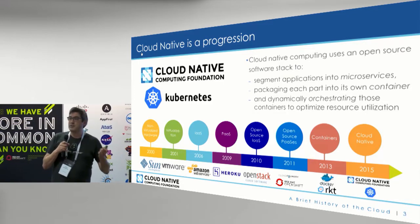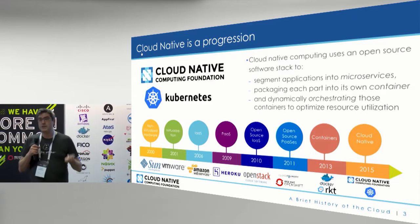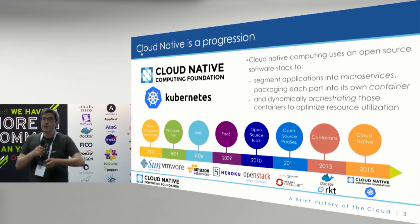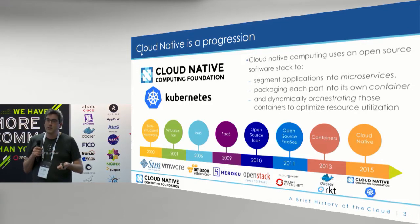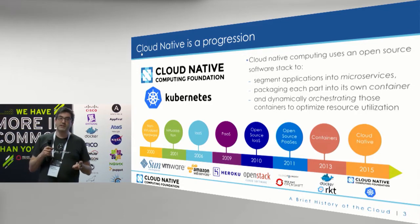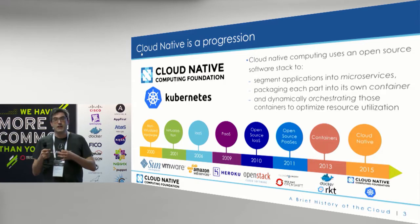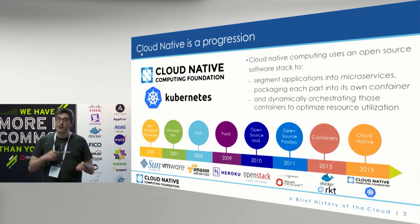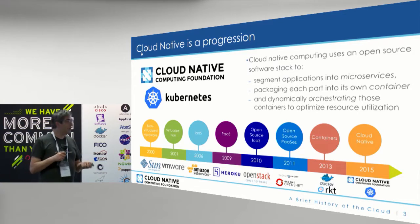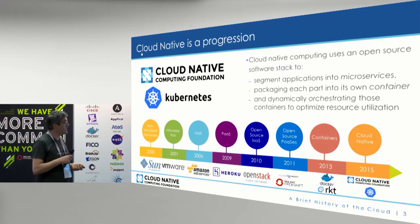The original problem Heroku was trying to solve was: Ruby is really great to develop with, but it's a nightmare operationally, and I'm trying to use the cloud — so how do I do that? They realized you could automate a bunch of things and give developers a developer-friendly API for operations. And there began this new era of cloud native from Heroku.